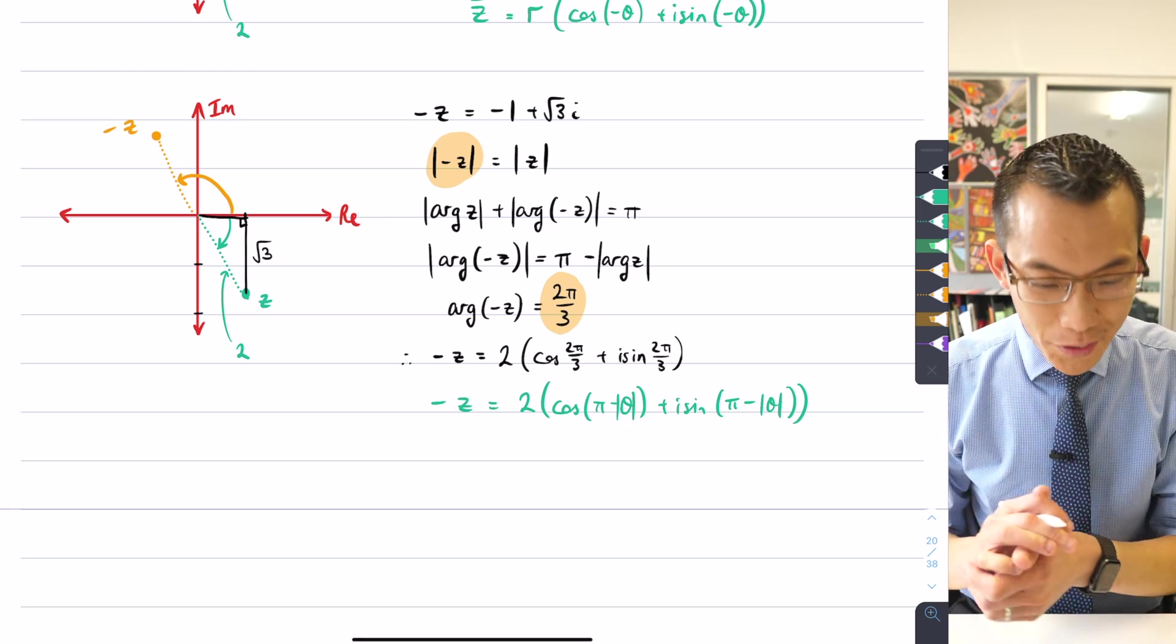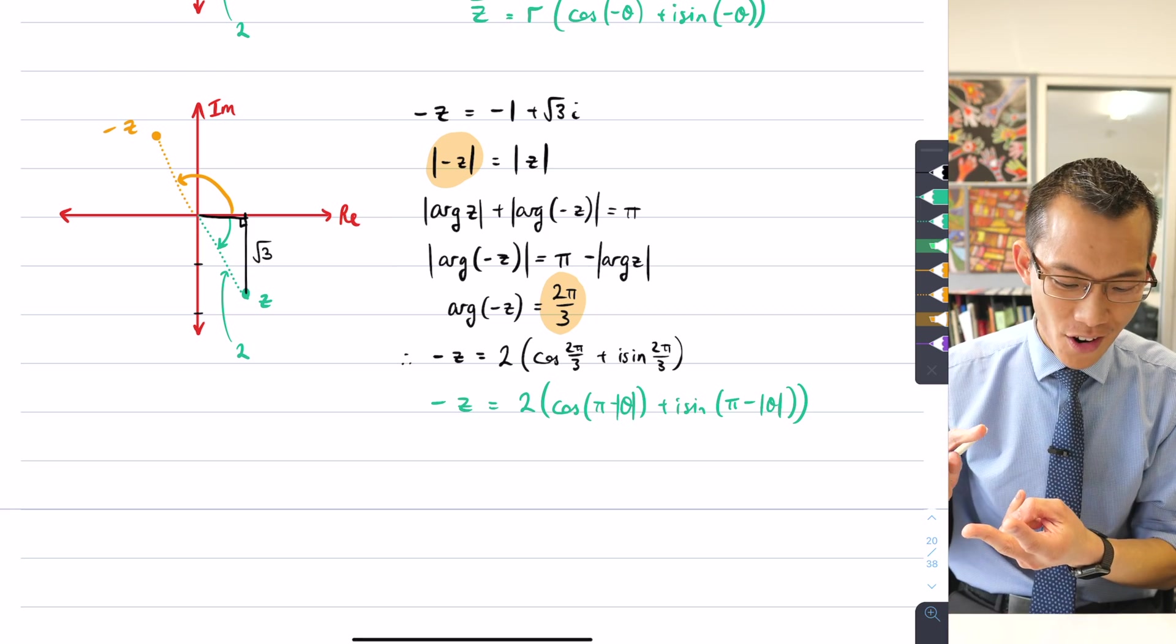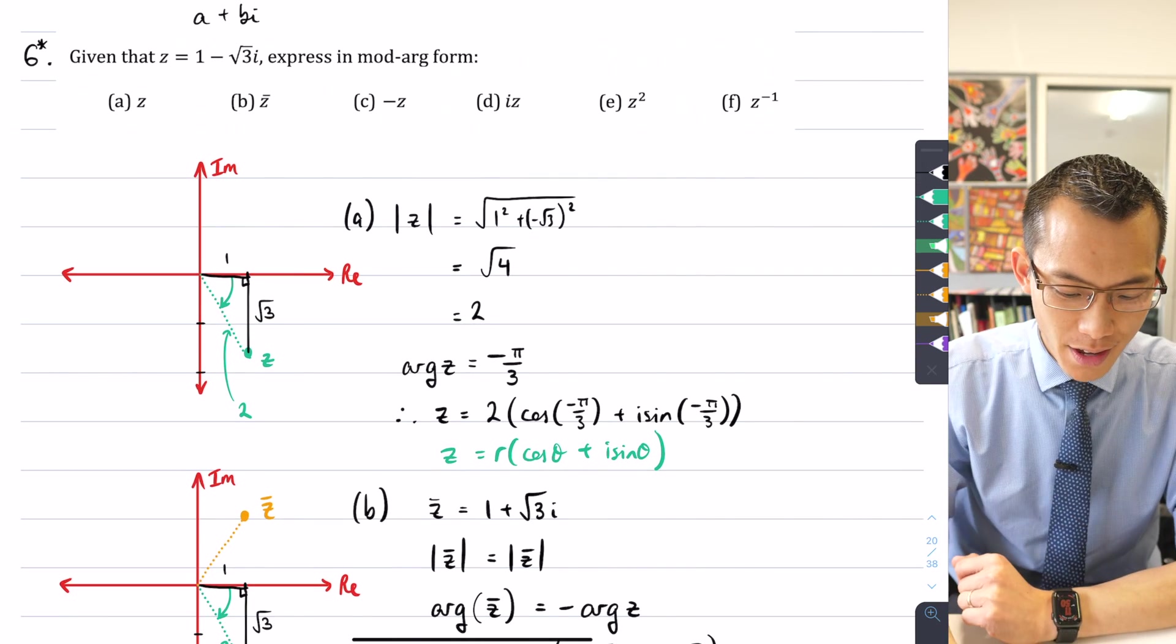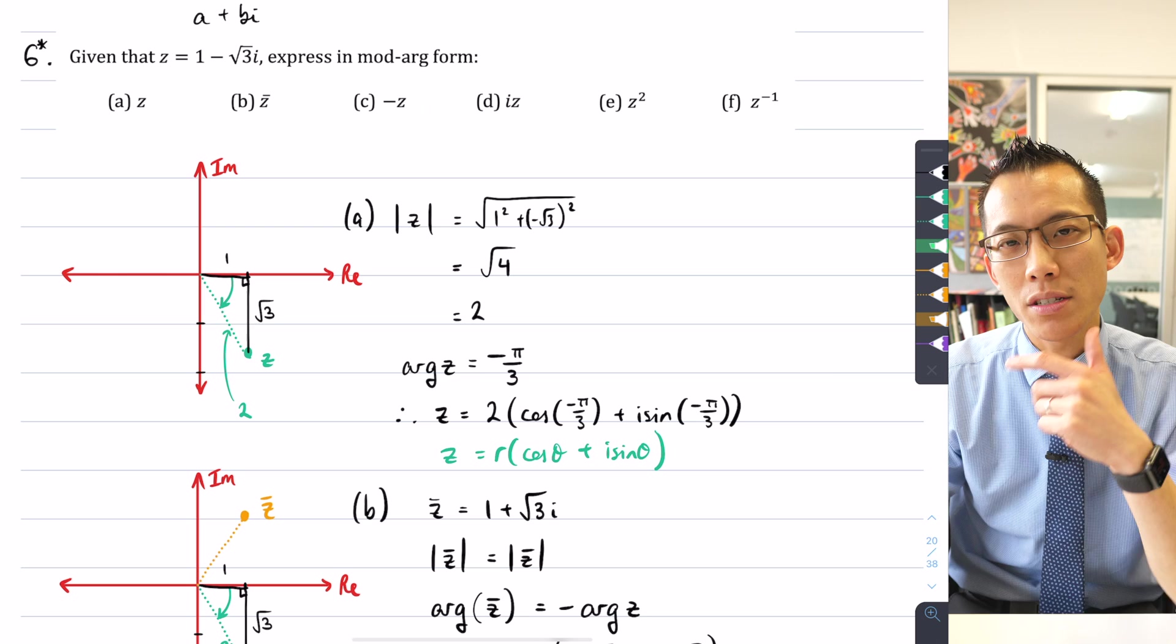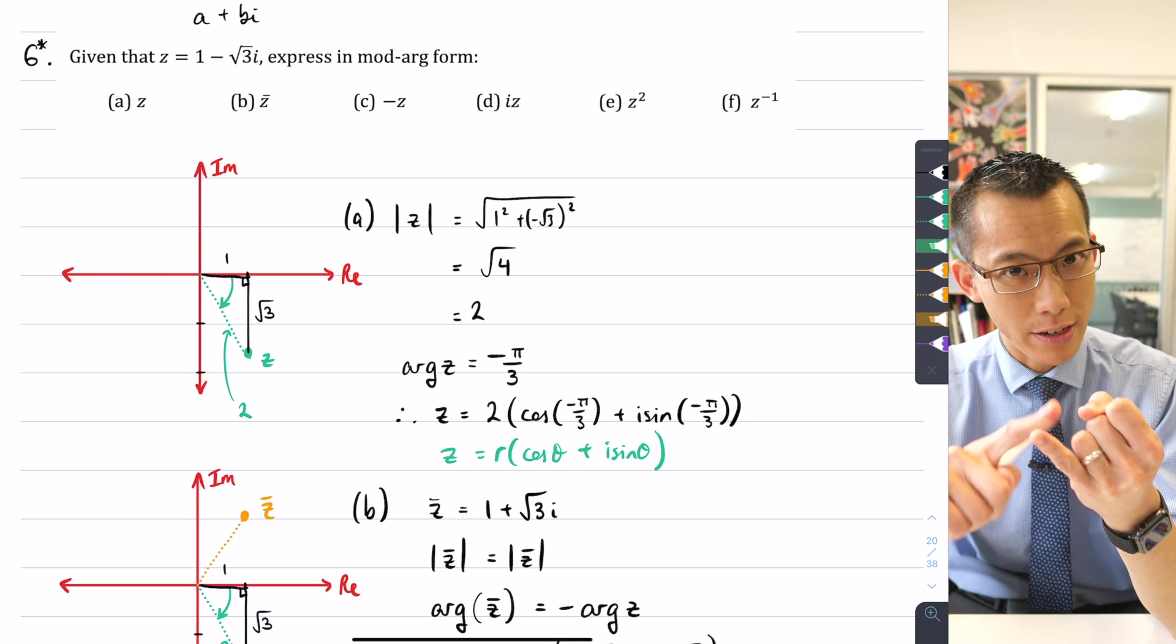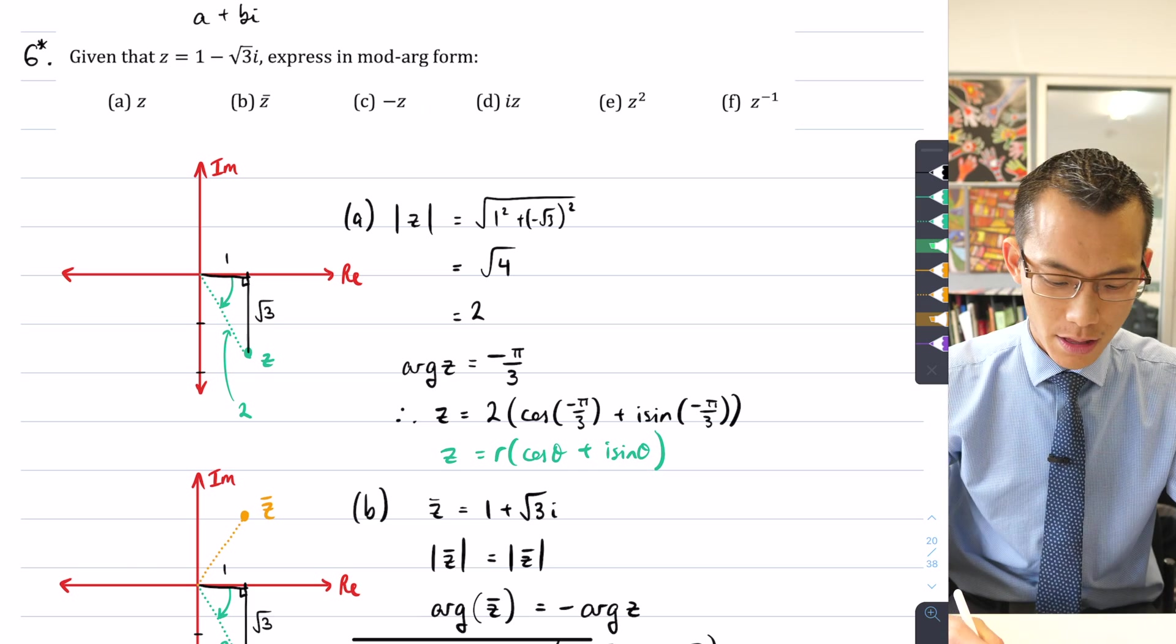Okay, so we've taken care of the conjugate, we've taken care of the negative, what's the next one we've got to have a look at here? Okay, so Iz, what does Iz do?